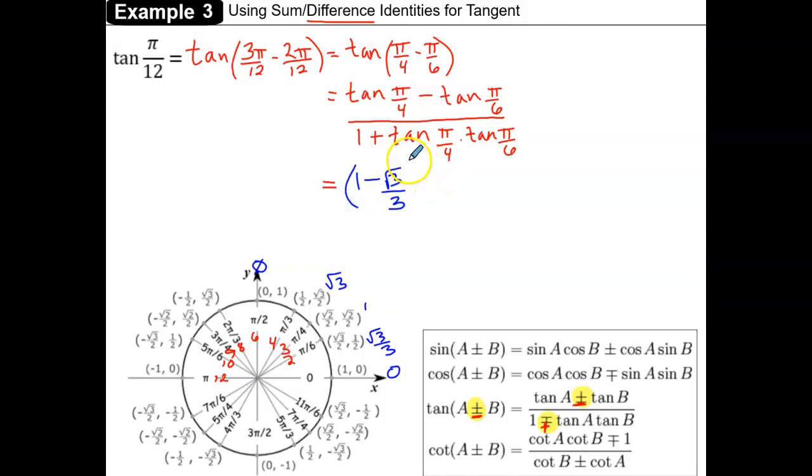To keep my math simple here, I'm going to use the divide symbol instead of the stacked fractions. So this will be divided by 1 plus, and then we have the tangent of pi over 4, which is 1, times the tangent at pi over 6, which was square root of 3 over 3.